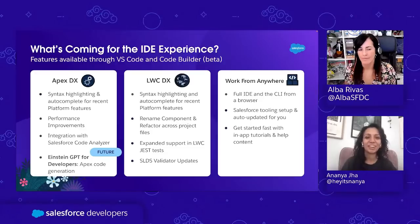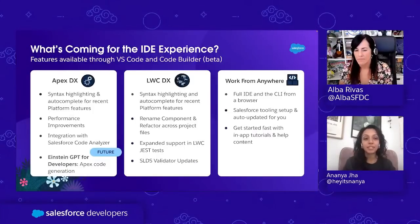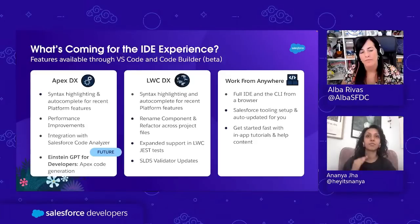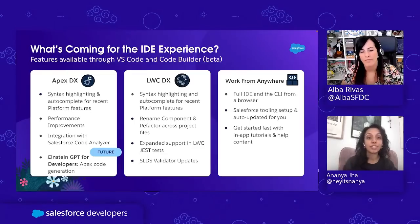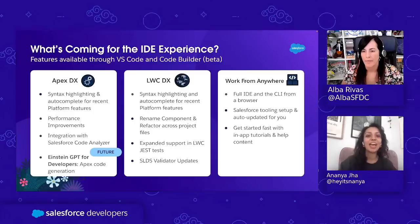Now I'll touch on the big announcement we put out earlier this year at TrailheaDX — Einstein GPT for developers. This year we will be laying the foundations to provide you with an AI-based developer tooling experience. Our goals are focused specifically around Apex code generation, making it easier to get started with Apex development and jump-start that development process inside your IDE. Later this year we will be opening up a pilot program specifically geared towards Apex code generation.